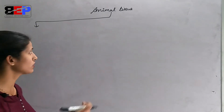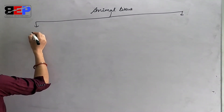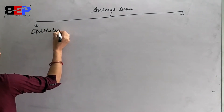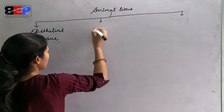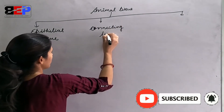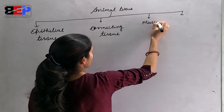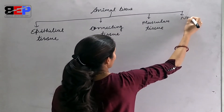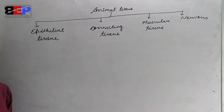First of all, we will see the classification of animal tissue. Animal tissue is of the following types: the first one is epithelial tissue, next one is connective tissue, then muscular tissue, and nervous tissue. These four types of tissue are present in animals.